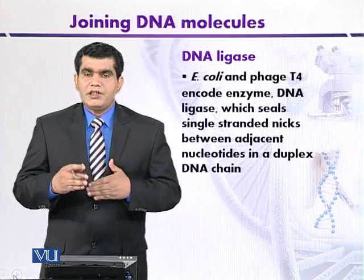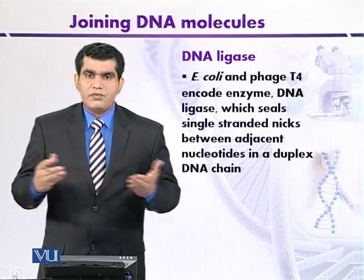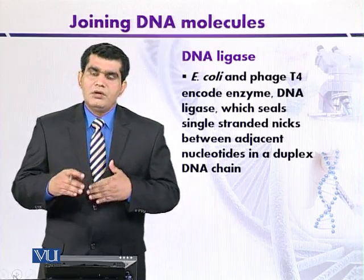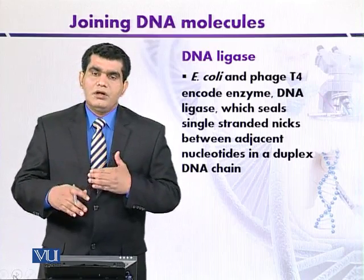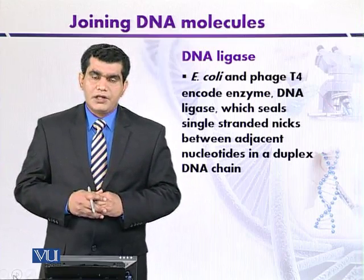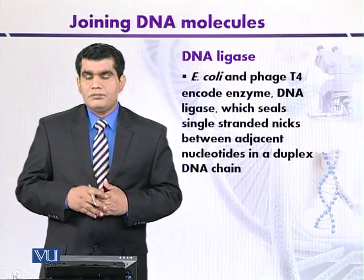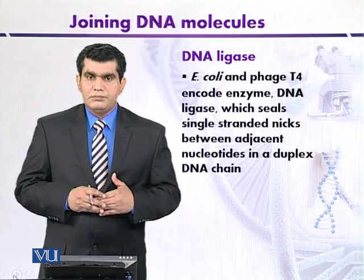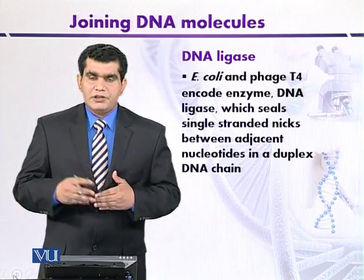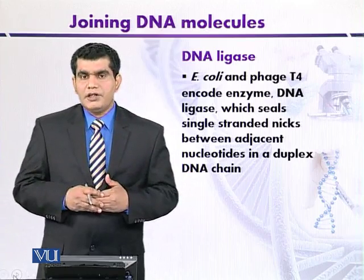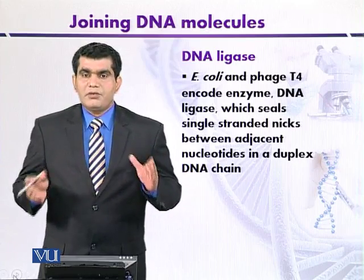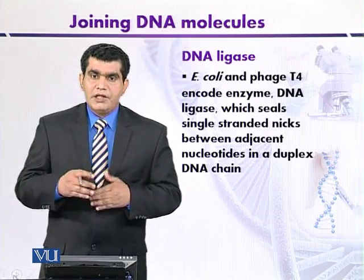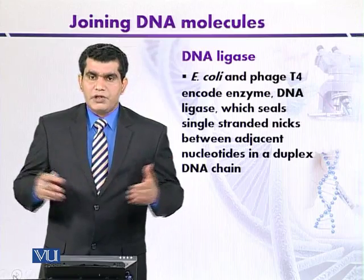In both cases — whether it is E. coli DNA ligase or DNA ligase from T4 phage — both will catalyze the formation of phosphodiester bonds. However, their cofactor requirements are different. T4 DNA ligase requires ATP, whereas the bacterial DNA ligase requires NAD+ (nicotinamide adenine dinucleotide). Both cofactors are hydrolyzed after interacting with DNA ligase, and an AMP-enzyme complex is formed, which is then used to form phosphodiester bonds.